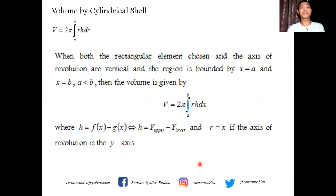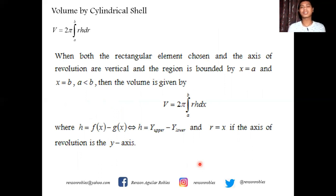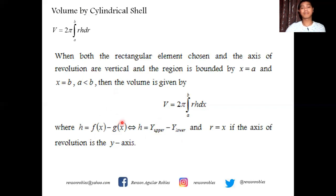When both the rectangular element chosen and the axis of revolution are vertical, and the region is bounded by curves f(x) and g(x) between two vertical lines x = a and x = b where a < b, the volume is given by V = 2π times the integral of r·h dx from a to b, where h = f(x) − g(x), or y_upper minus y_lower, and r = x if the axis of revolution is the y-axis.